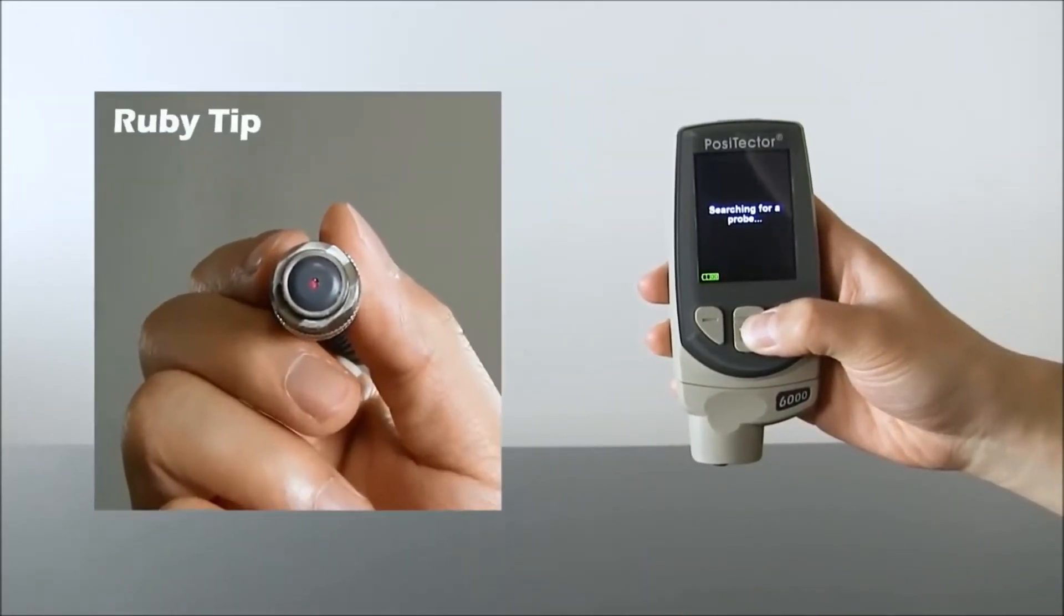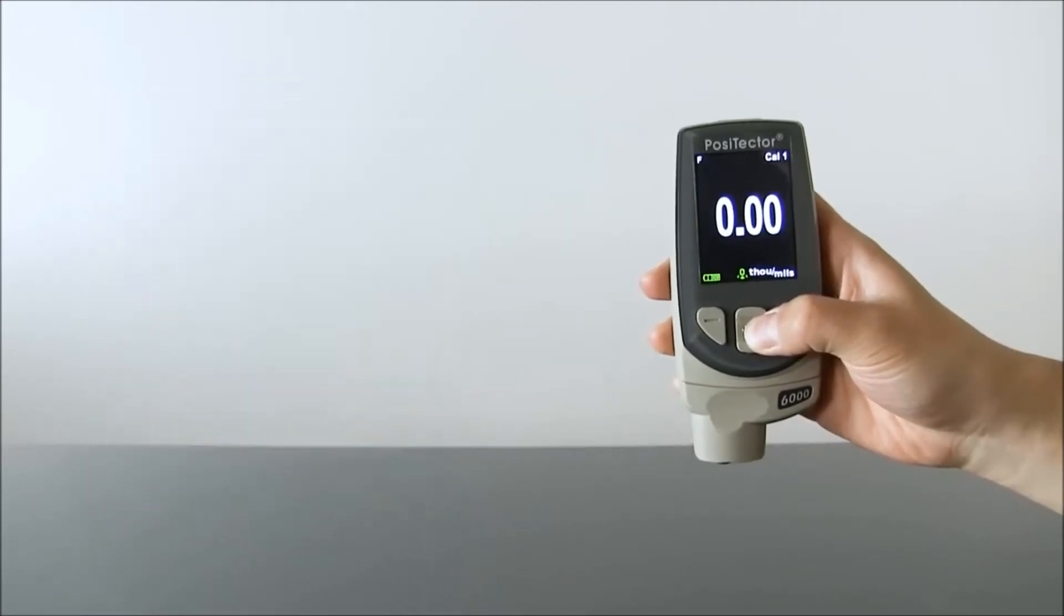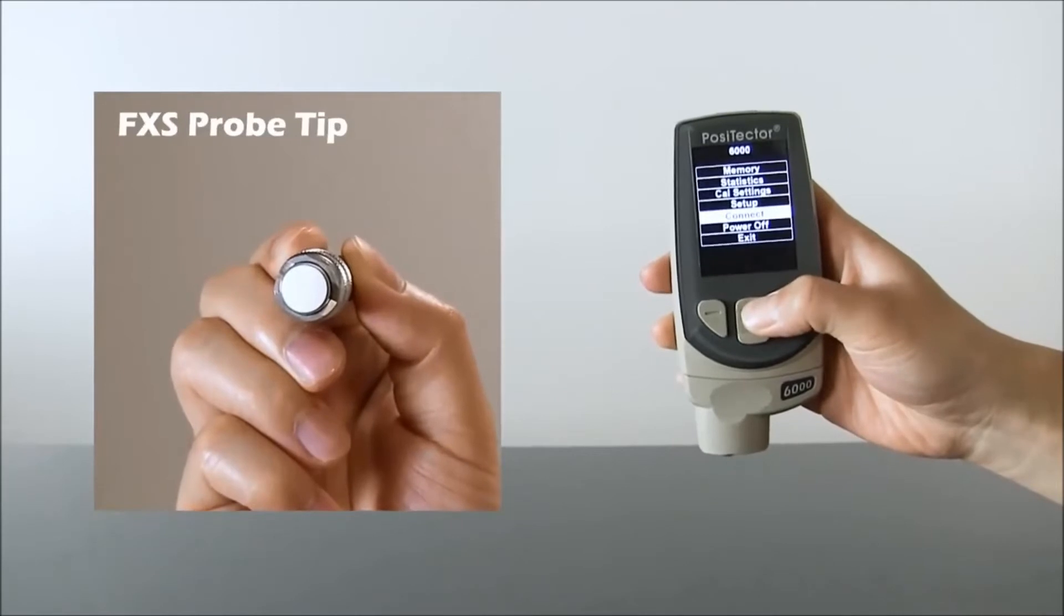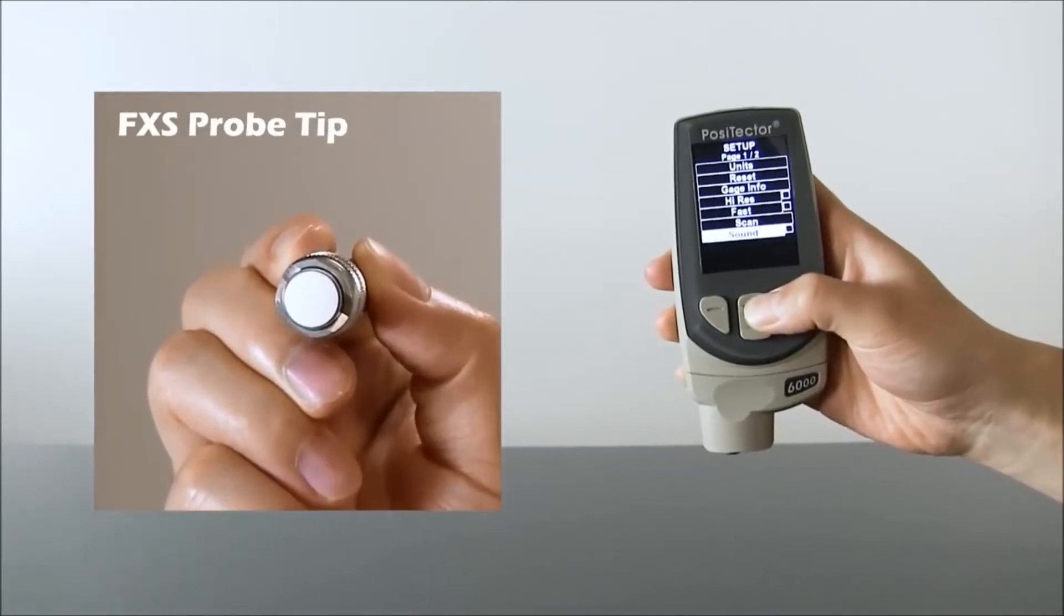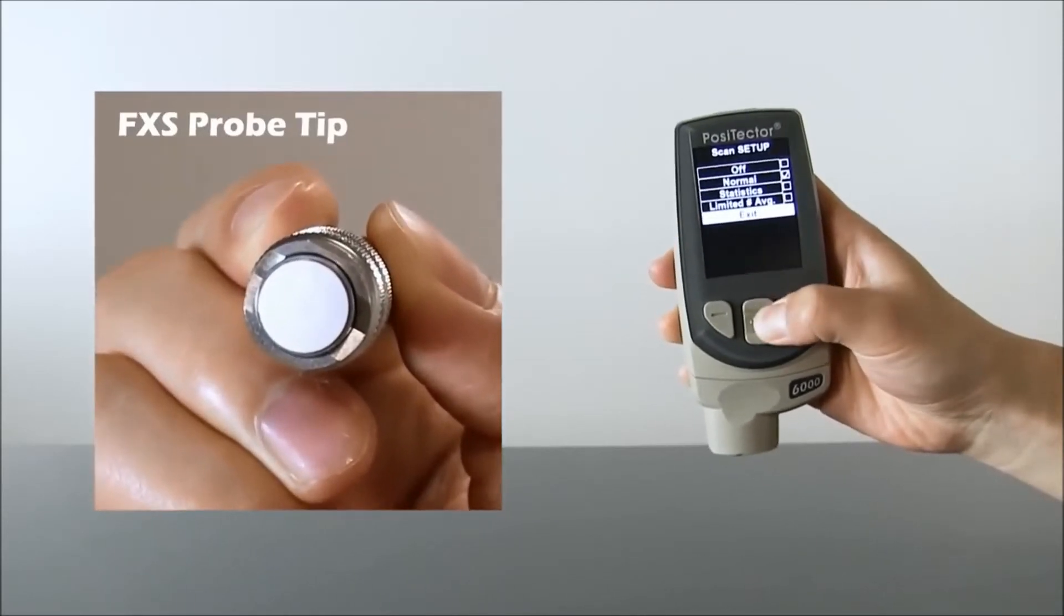Durable ruby-tipped probes on our most popular probe models prevent wear and maintain the factory calibration. For rough coatings, the Positector 6000 F-XS and F-H-XS probes feature zirconia-toughened alumina wear faces.